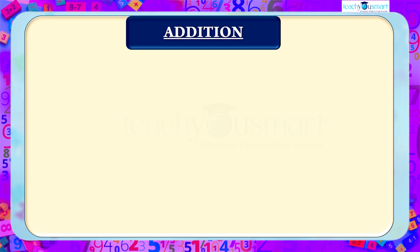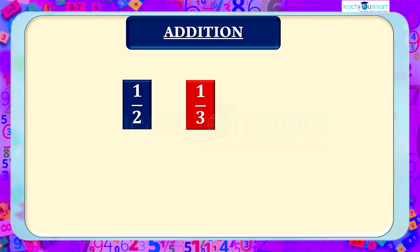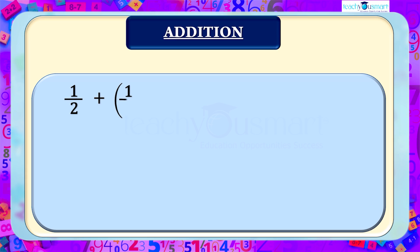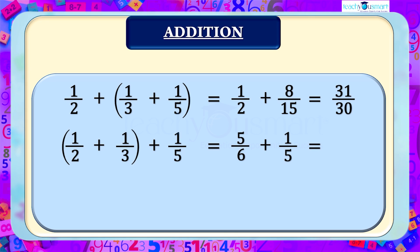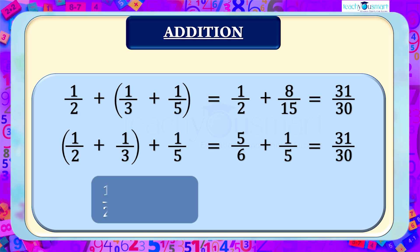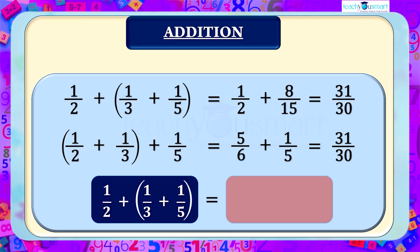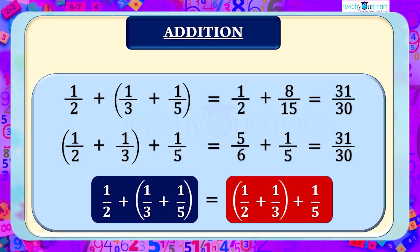We will start with addition. Take three rational numbers: 1/2, 1/3, and 1/5. When adding these numbers, we can group them as either (1/2 + 1/3) + 1/5 = 1/2 + 8/15 = 31/30, or 1/2 + (1/3 + 1/5) = 5/6 + 1/5 = 31/30. The results are the same regardless of the grouping.